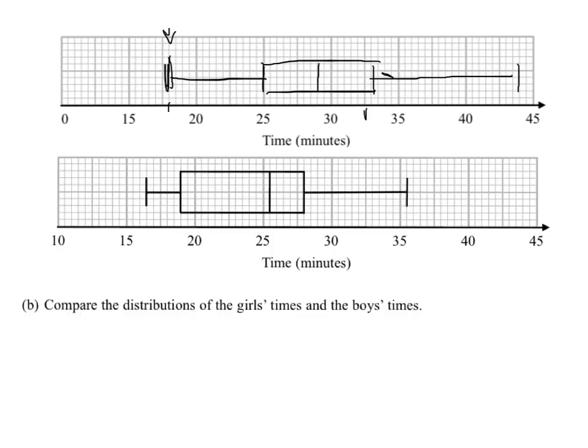The second part of the problem, we're shown a boys' box plot, and we're asked to compare the distribution of girls' times and boys' times. You can see clearly that the girls have the higher median, so the girls are taking more time to do the jigsaw. We'll make that statement first.